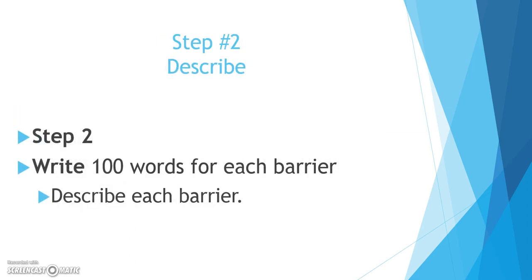The next step in this assignment is to write, and you're going to be writing about three different aspects. You're to write a hundred words for each barrier. The hundred words is a minimum, not a maximum, so if you go over that is okay. The hundred words will include the next three things I'm going to cover, so you would have at least a total of 200 words — 100 for each barrier.